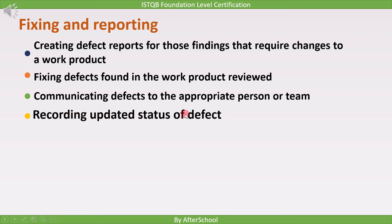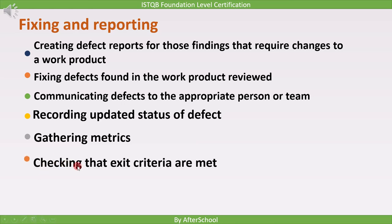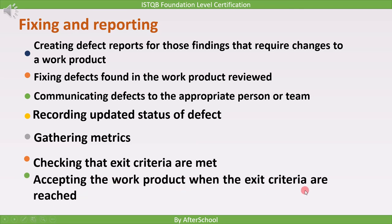Next is recording the updated status of the defect. Once a defect is fixed, we change its status from in-progress to closed, so one can know how many defects are open and how many are closed. Next is gathering metrics — we gather data like how many defects are still open and how many major defects are open. Once we gather the metrics, we check that the exit criteria are met. For example, exit criteria could mean no major defect shall remain in open stage. Based on the metrics, we decide whether to accept the work product or not.